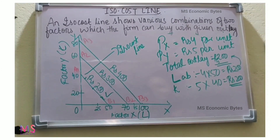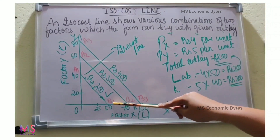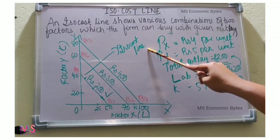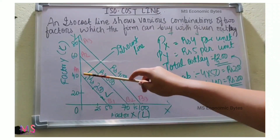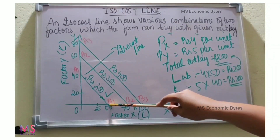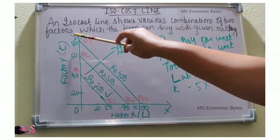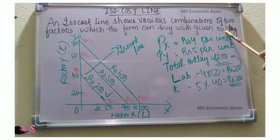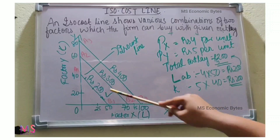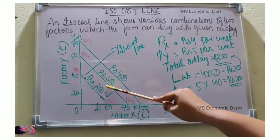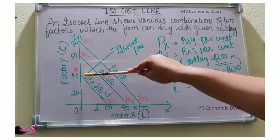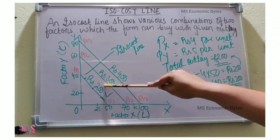By joining these two points, A1 and B1, we get a line which is called the isocost line. The isocost line shows various combinations of two factors which the firm can buy with a given outlay. Here the total outlay is ₹200, so any point on this line will cost ₹200 to the firm.